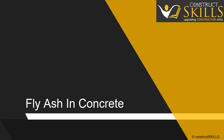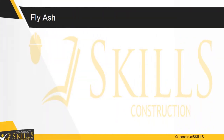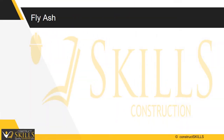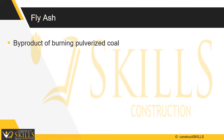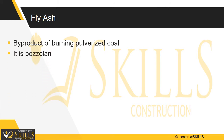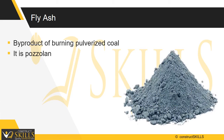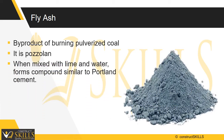In this lecture, we are going to learn about the advantages and disadvantages of using fly ash in concrete. Fly ash is a fine powder that is a by-product of burning pulverized coal in electric generation power plants. Fly ash is a pozzolan — that is, a substance containing aluminous and siliceous material that forms cement in the presence of water. When mixed with lime and water, fly ash forms a compound similar to Portland cement.